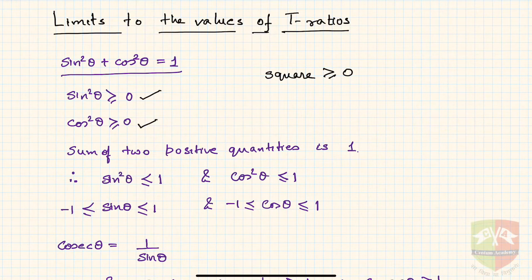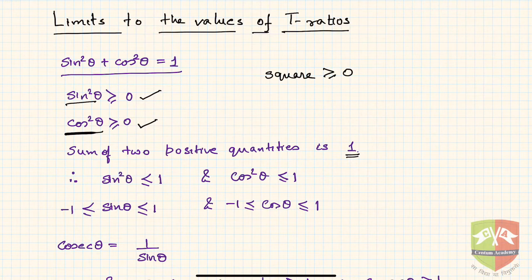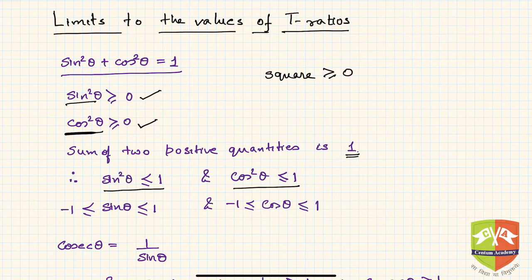Similarly, cos²θ is always greater than or equal to zero. Now we have two non-negative quantities — sin²θ and cos²θ — whose sum equals one. That means each one of them must be less than or equal to one. So sin²θ ≤ 1 and cos²θ ≤ 1. When sin²θ = 1, cos²θ = 0, and when cos²θ = 1, sin²θ = 0.